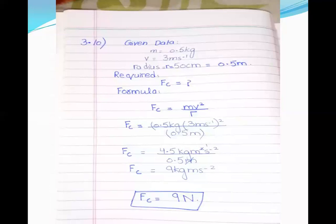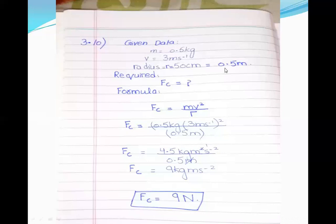The last numerical: how much centripetal force Fc is needed to make a body of mass 0.5 kg move in a circle of radius 50 centimeters? Converting radius: 50 cm divided by 100 equals 0.5 meters. The speed V is 3 meters per second.